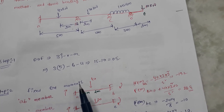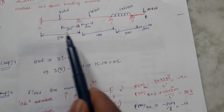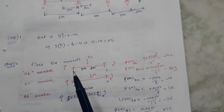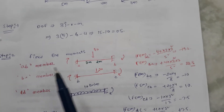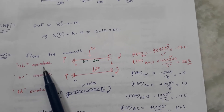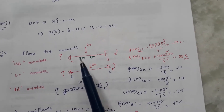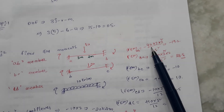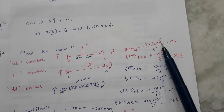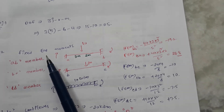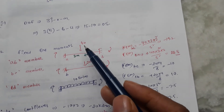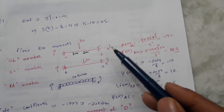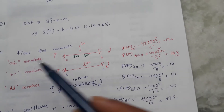We need to consider the ends as fixed because this is a displacement method, and the assumption is fixed end moments. For member AB, there is a point load, so we use the formula: minus P·a·b² divided by l². Here P is 40 kilonewtons, a is 3 meters, and b is 2 meters, so b² is 4 and l is 5 meters total.